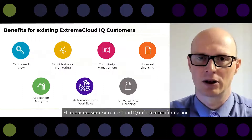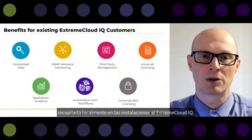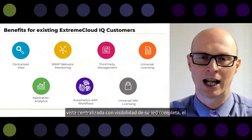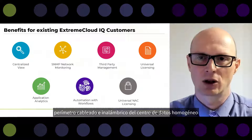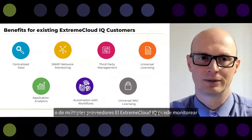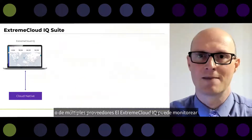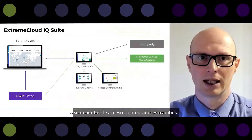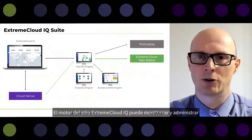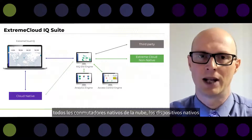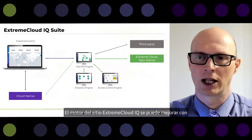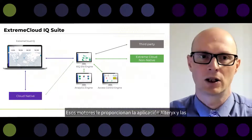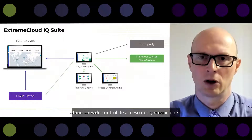The Xtreme CloudIQ Site Engine reports information gathered locally on-premise to Xtreme CloudIQ. Xtreme CloudIQ provides you with a centralized view with visibility to your complete network — wired and wireless, edge to the data center, homogeneous or multi-vendor. Xtreme CloudIQ can monitor and manage cloud-native devices, either access points or switches or both. The Site Engine can monitor and manage all cloud-native switches, non-cloud-native devices, and third-party devices. It can also be enhanced with analytics engines and access control engines that provide application analytics and access control features.